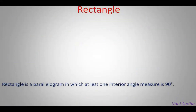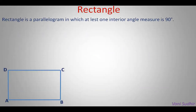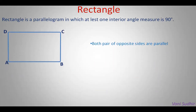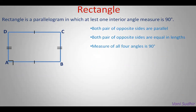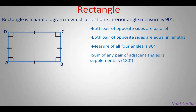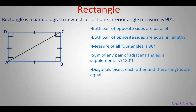Rectangle is a parallelogram in which at least one interior angle measures 90 degrees. Both pairs of opposite sides are parallel and equal: AB equals DC (the length), and AD equals BC (the breadth or width). The measure of all four angles is 90 degrees. Diagonals bisect each other and their lengths are equal — if diagonal lengths are equal in a parallelogram, it becomes a rectangle. DO equals BO, and OC equals AO.